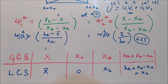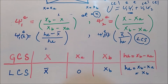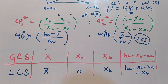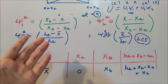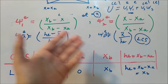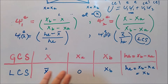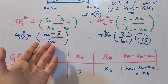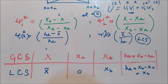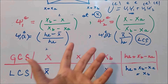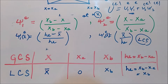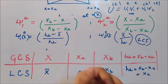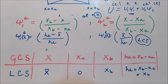Hello everyone, this is D.A. from E-Academy. In the previous video, we talked about the relation between the local coordinate system and the global coordinate system, and how we can transform any equation written in the global coordinate system into the local coordinate system. You know that those two shape functions are of a linear element. In today's video, we will see how we can derive the shape function for a quadratic element.